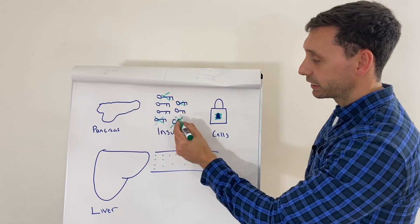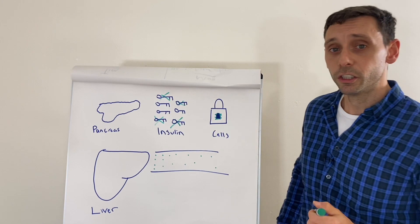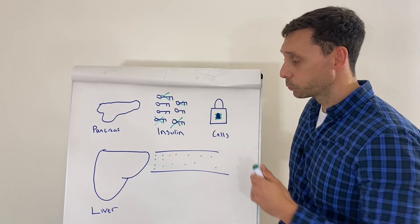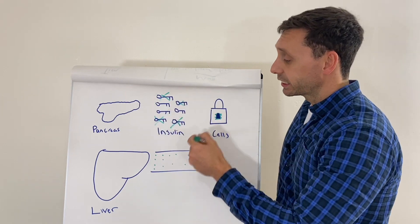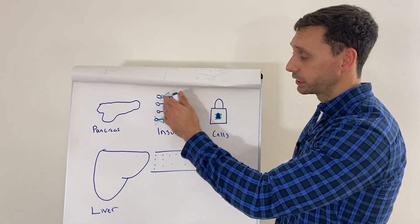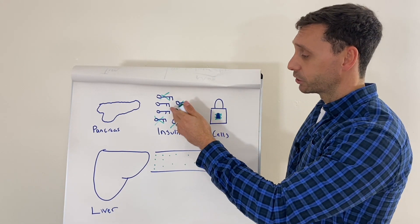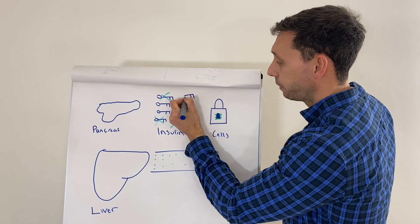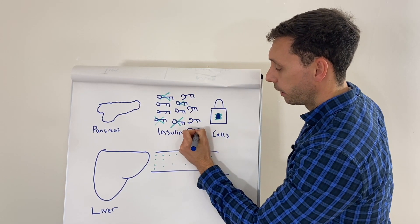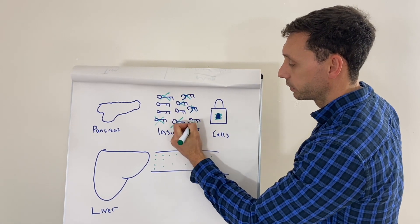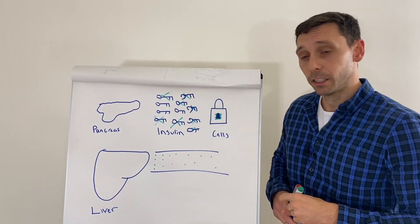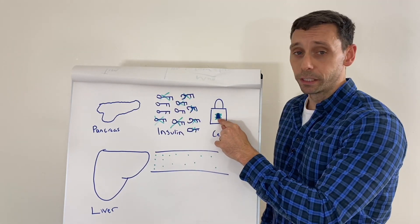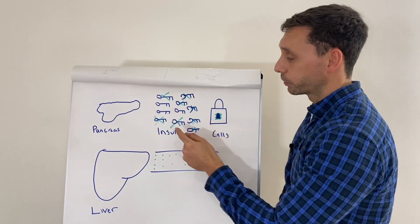So essentially, your pancreas is releasing the insulin, the insulin is getting to the cells, but the keys aren't fitting the locks. So some locks open, some locks don't. As a result, you end up with more glucose sitting in the blood because it can't get into the cells where it wants to be used for energy. So your insulin is essentially working less efficiently. You're producing the same amount of insulin. And in fact, over a period of time, as your body starts to recognize this has happened and glucose levels start to rise, your pancreas will release even more insulin to accommodate this. So you'll get more keys floating around. But unfortunately, it doesn't necessarily mean lower blood glucose levels because they're still not opening the locks. So you end up with this situation where you have a lot of insulin in your body. It's not working very efficiently. It's not opening all the locks. Glucose is sitting in the blood. This feedback loop tells the pancreas to produce even more insulin.